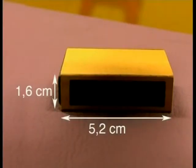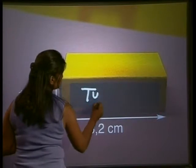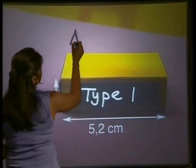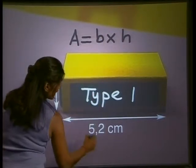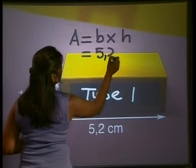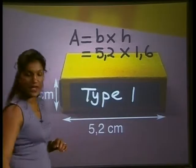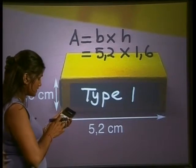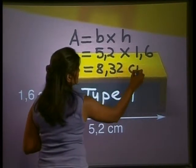Let's start by working out the surface area of the front face rectangle. The front face rectangle is this side over here and we'll call this type 1. The surface area of this rectangle is given by the formula: area equals base multiplied by height. The base is 5.2 and the height is 1.6. Using our calculator, 5.2 multiplied by 1.6 gives us 8.32 cm².